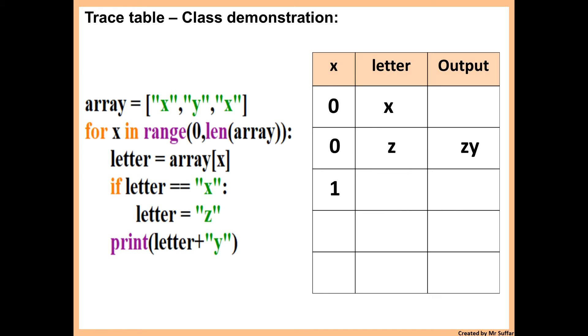Letter is equal to array x. Array x is y now. Then if letter is equal to x, that's false. Because that's false, it will display yy.